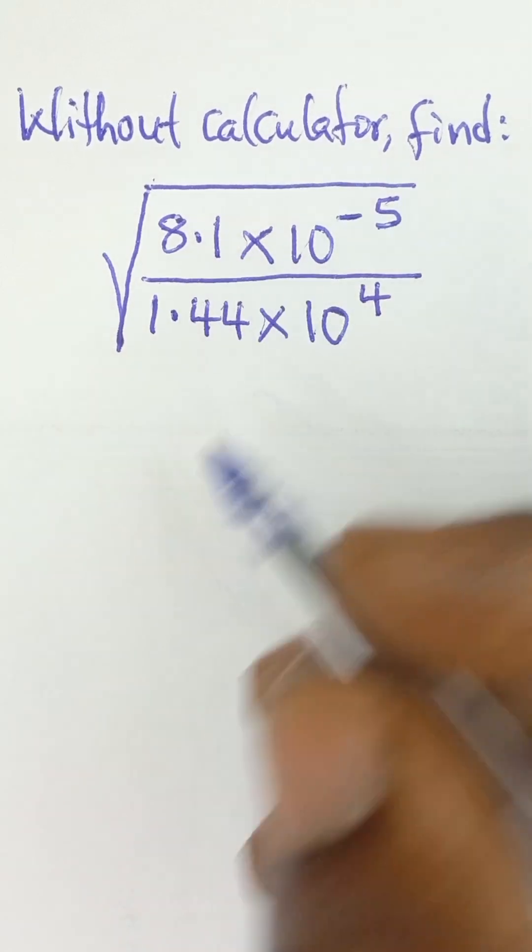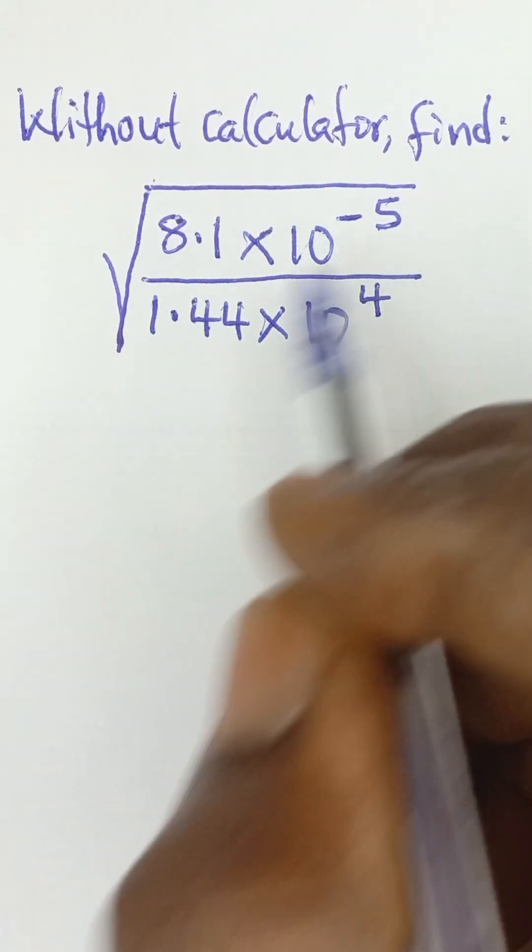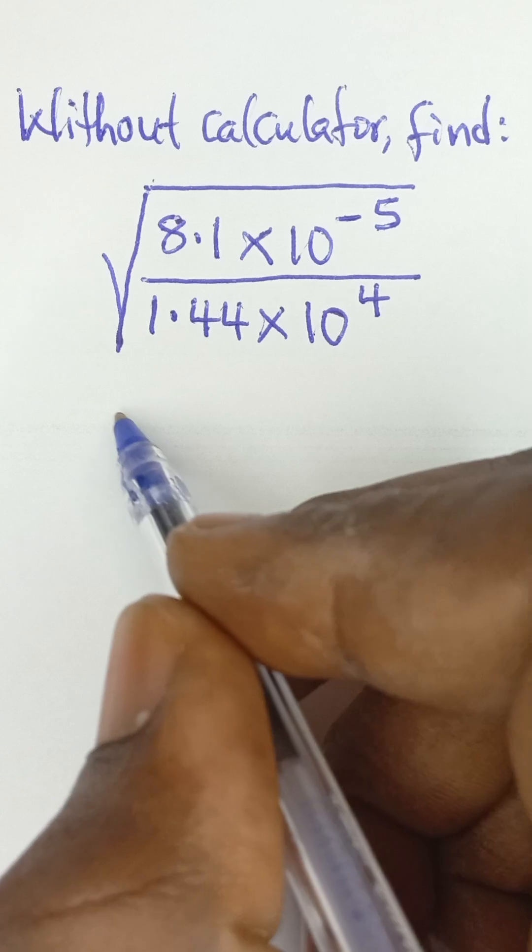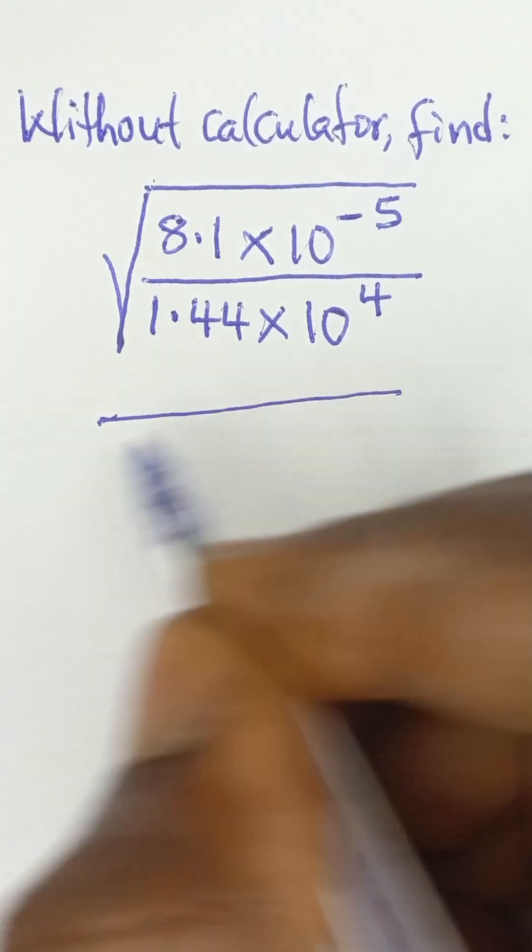So now, for us to find the square root of this, what we need to do is first of all evaluate what we have inside the root sign. So let me bring that out.